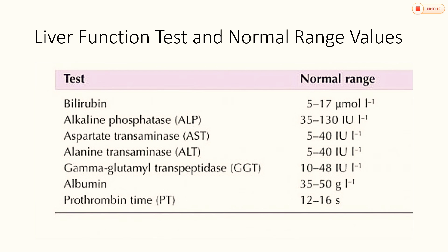As we have covered in the last topic about the kidney function test, similarly, when you go for a blood test, apart from the blood cell counts, you have many other parameters which would be taken into consideration for a liver function. Among them, the most important ones are bilirubin, alkaline phosphatase, aspartate transaminase, alanine transaminase, gamma glutamyl transpeptidase, albumin, and prothrombin time.